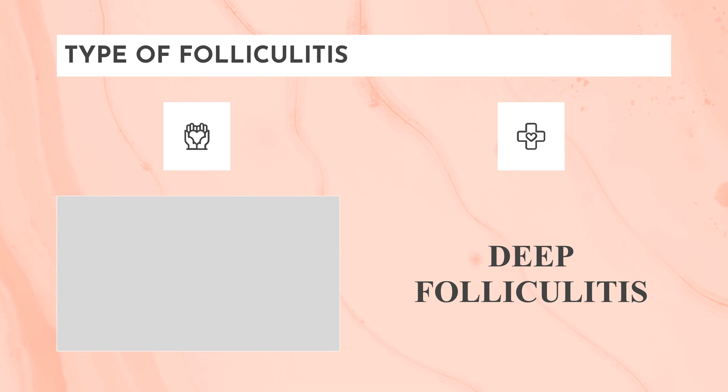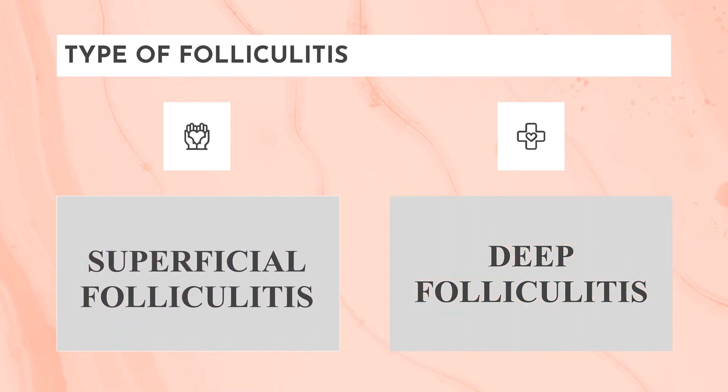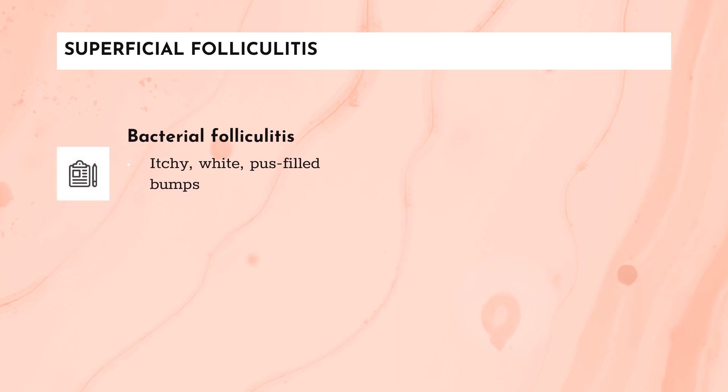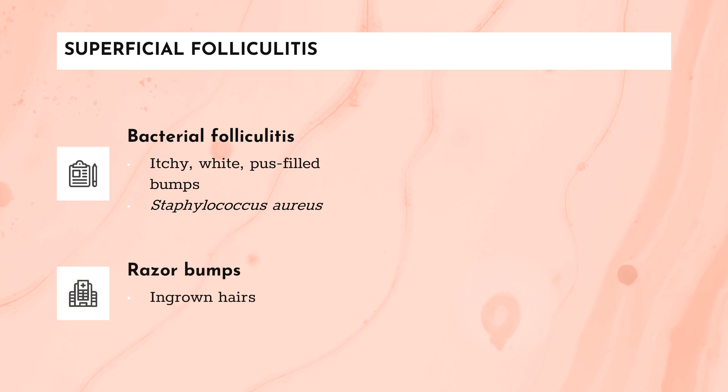There are two primary types of folliculitis: superficial and deep. Forms of superficial folliculitis include bacterial folliculitis, which is the most common type, marked by itchy white pus-filled bumps. It occurs when hair follicles become infected with bacteria, usually Staphylococcus aureus, which enters the body through a cut or other wound.